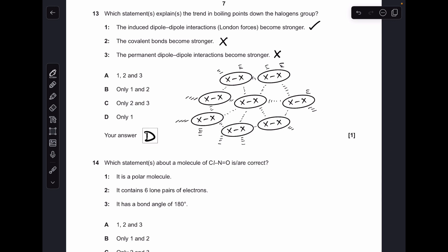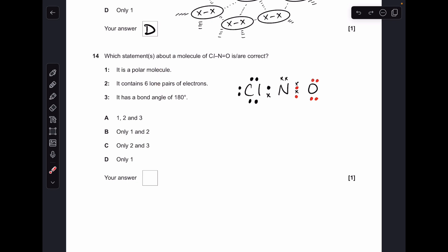So only one was right, D. Moving on to number 14. So given the nature of these statements, the easiest thing to do is knock up a little dot and cross diagram for this molecule. So is it polar? Yep, because the terminal atoms are different. We've also got a lone pair around the central atom as well, so it's definitely polar. It's got six lone pairs of electrons. Well, let's count them up. One, two, three, four, five, six. Yep. And it has a bond angle of 180 degrees. Well, it definitely looks linear the way I've drawn it, but because of that lone pair, you've got this extra repulsion from the lone pair. It's actually going to push these bonds down, so it's actually a non-linear molecule. So that one was wrong. One and two correct, B is the answer.